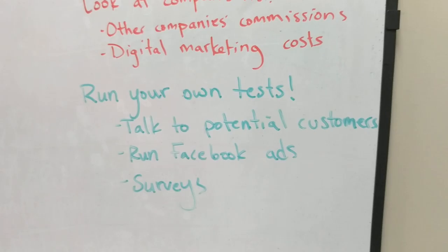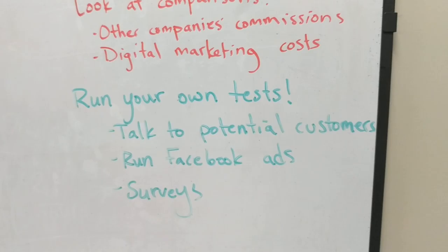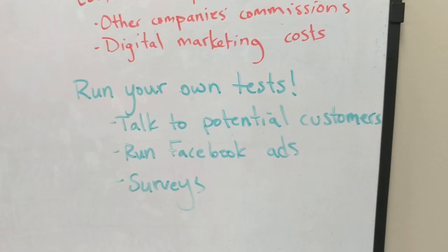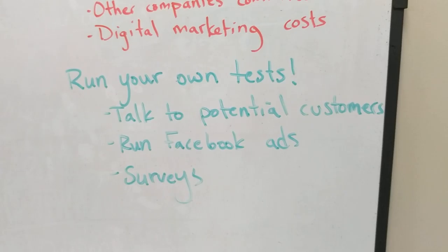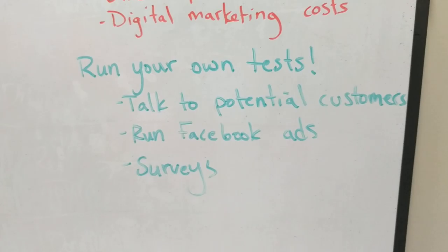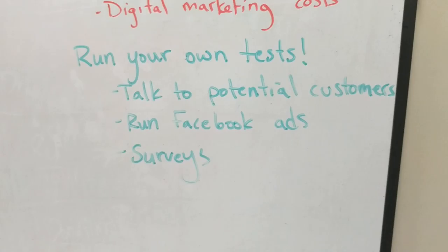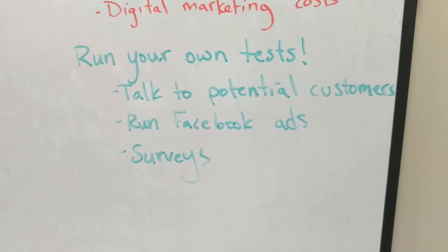You can also run surveys with potential customers. The wording on the survey is probably best if you're trying to figure out price — for example, ask how likely would you be to buy this product if it costs $39 a month, on a scale from not at all likely to very likely. Then you can change the price point and see how likely people are to buy at different prices. That's better than just asking how much do you want to spend, because nobody knows how to answer that question.